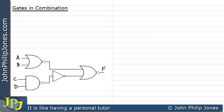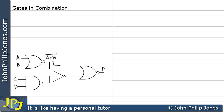Here we have another combinational logic circuit with two NOR gates, a NAND gate, and a NOT gate. The first NOR gate gives NOT(A or B). That feeds into the final NOR gate as one input. The NAND gate gives NOT(C and D), which feeds into a NOT gate. The output of the NOT gate is NOT(C and D), NOTted again — so we have two NOTs on that expression.